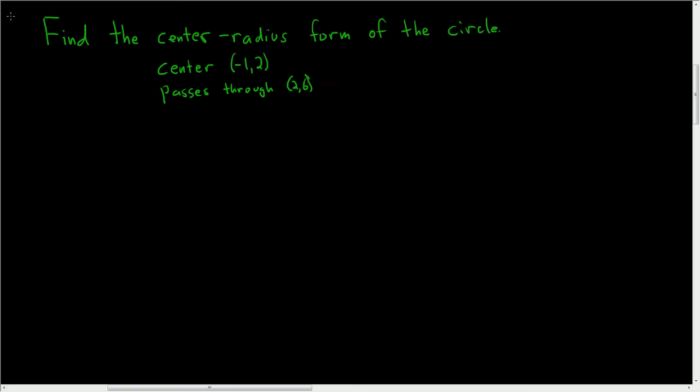Find the center-radius form of the circle. We're already given the center and we're given a point, so solution.